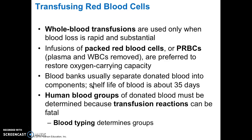Transfusing red blood cells: whole blood transfusions are used only when blood loss is rapid and substantial. Infusions of packed red blood cells, or PRBCs, which are blood that has the plasma and white blood cells removed, are preferred when restoring the oxygen-carrying capacity. Blood banks usually separate donated blood into components. The shelf life of blood is about 35 days.